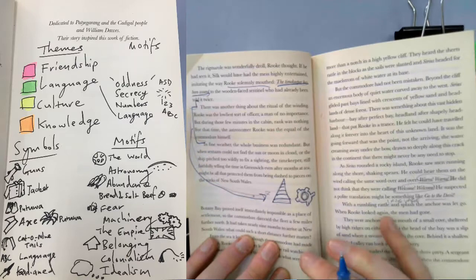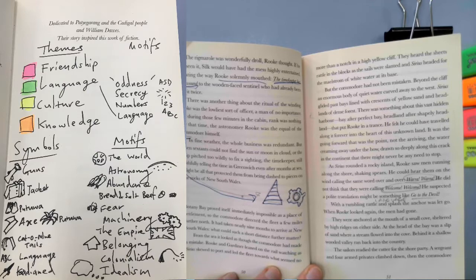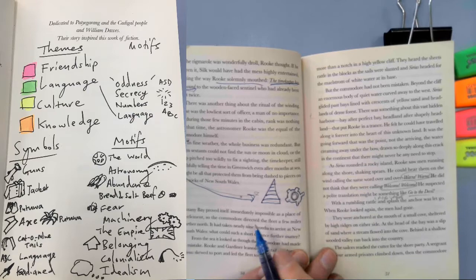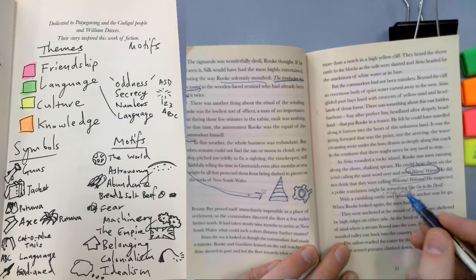There was another thing about the ritual of the winding. So this section is important because it takes us back to the colonial machine that he's a part of and also the hierarchy. So it's not just that the colonial machine is a thing. There's also an element where he's worried that he's very low on the rank. And so that's going to bother him and challenge him. But in this situation, the hierarchy isn't important because in this moment, he is the most important person on the ship, among others, of course.